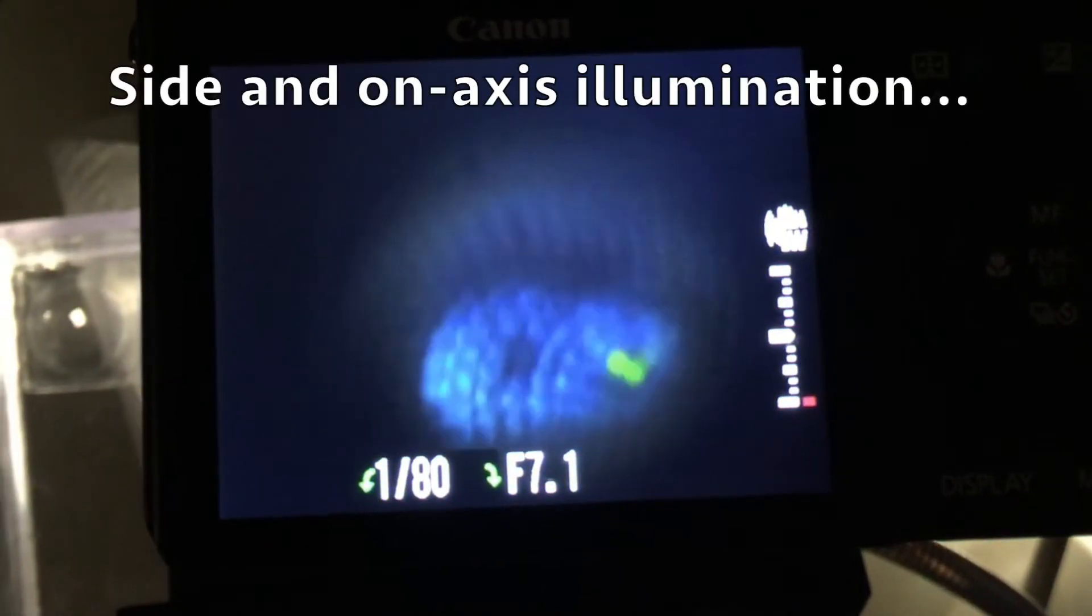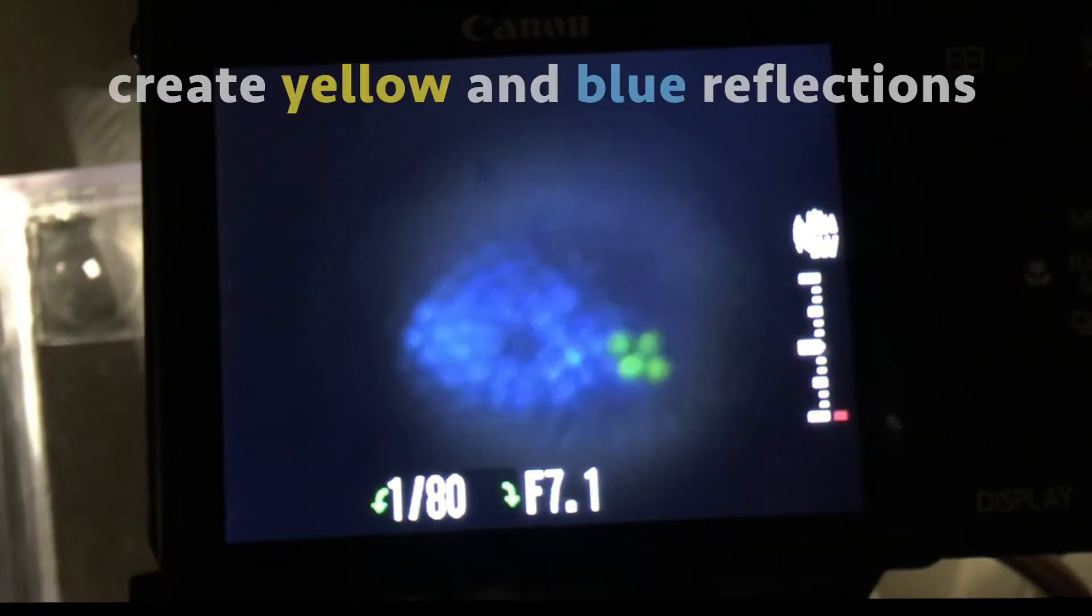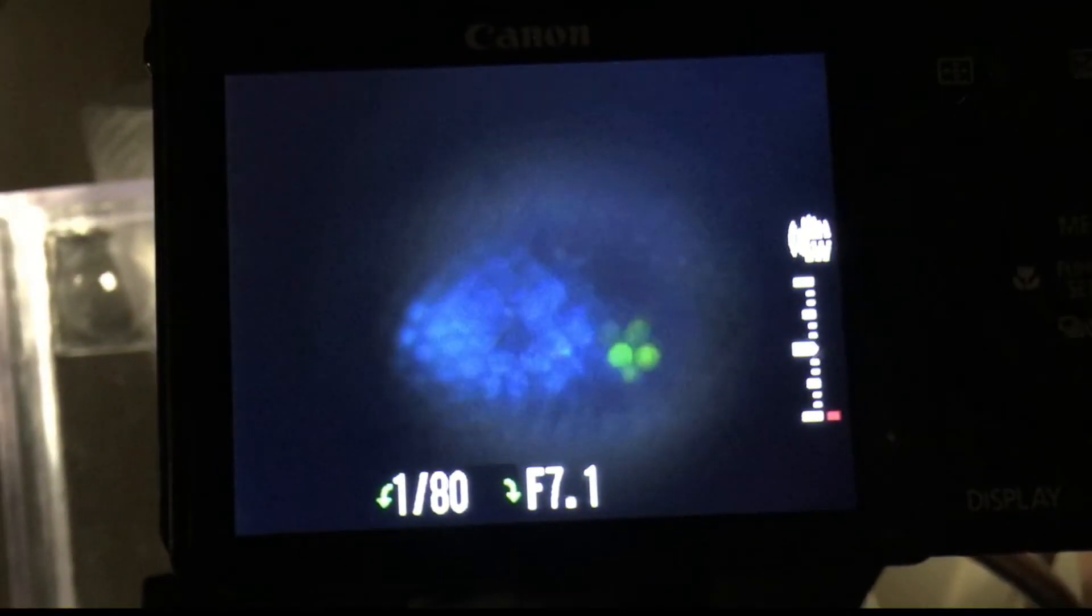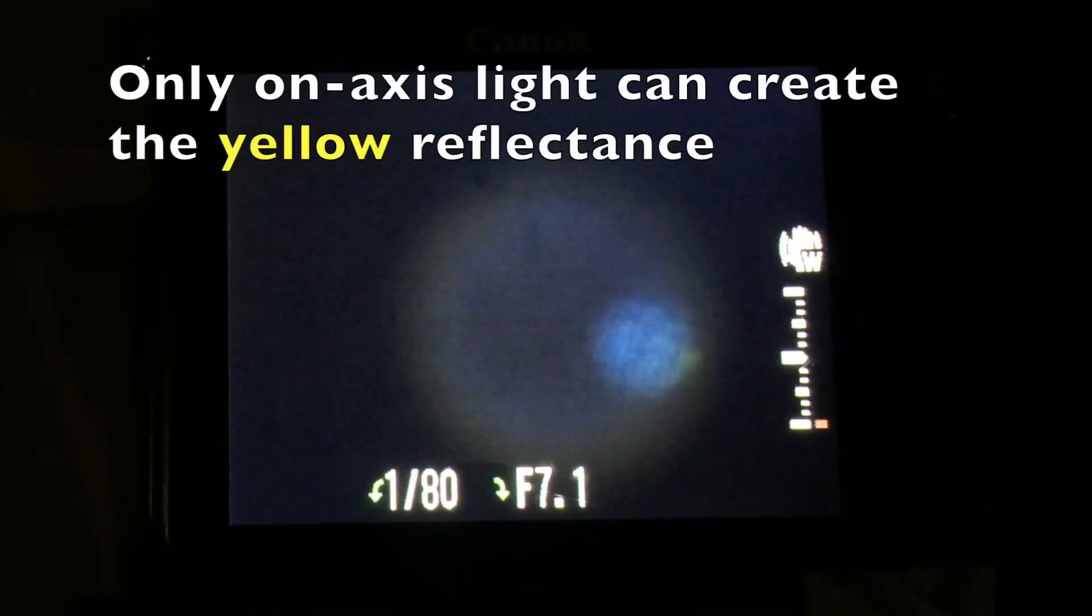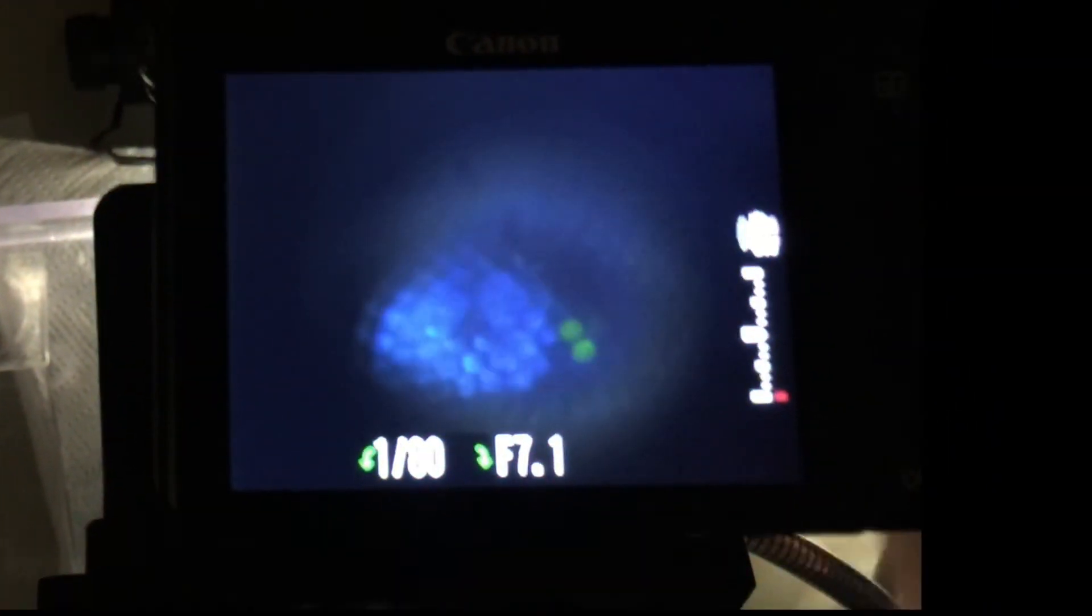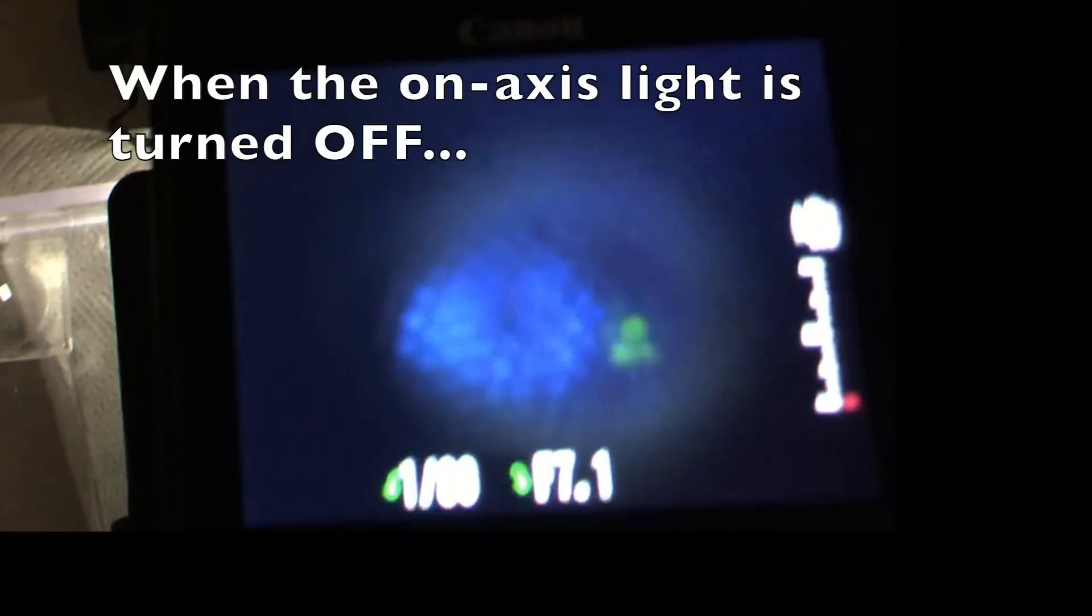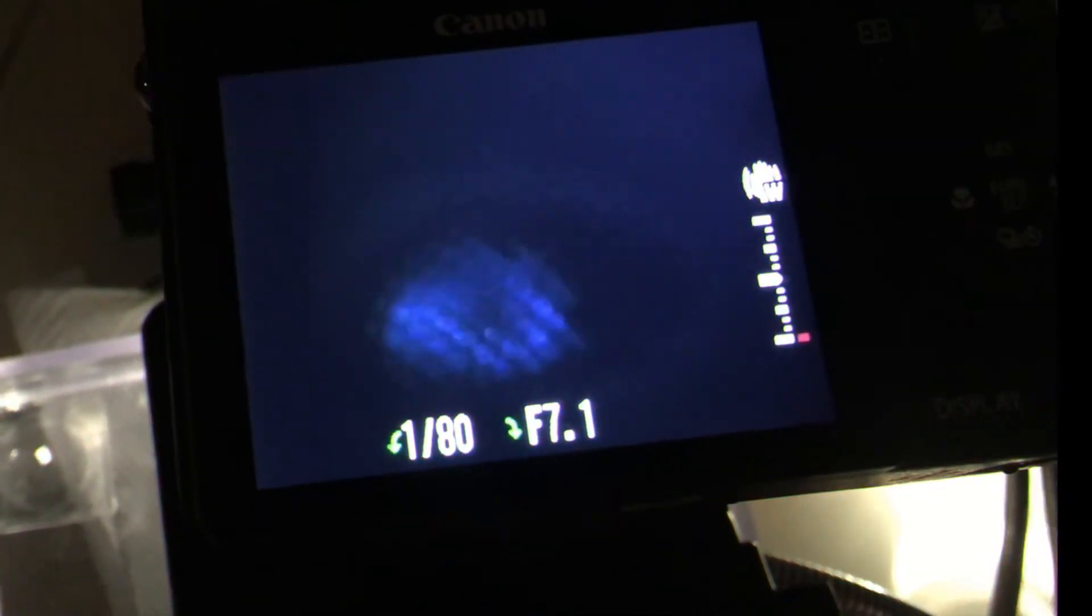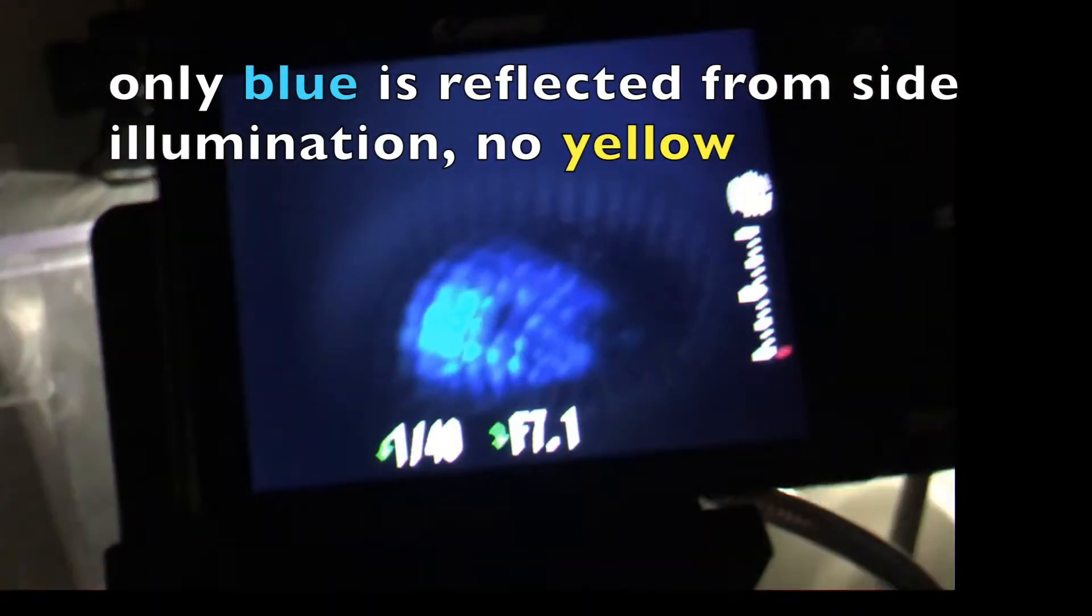We measured ISR reflectance in live animals through a microscope. Side and on-axis illumination create yellow and blue reflectances in the eyes of live mantis shrimp larvae. Only on-axis light can create the yellow reflectance. When the on-axis light is turned off, only blue light is reflected from the side illumination, no yellow.